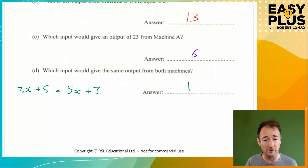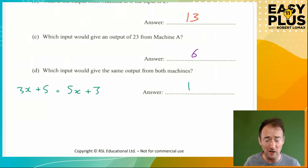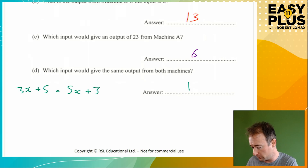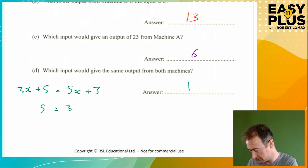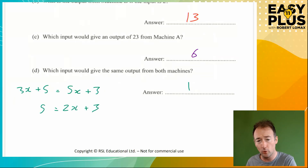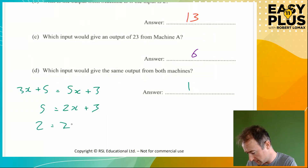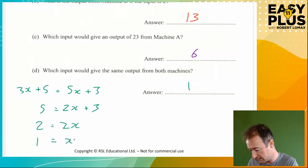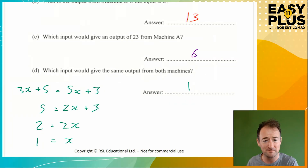Now we just solve the equation. We want all the x's on one side, so we take away 3x from both sides: 5 equals 2x plus 3. We want all the numbers on one side, so we take away 3 from both sides: 2 equals 2x. Divide both sides by 2: 1 equals x, so x equals 1. And we've got that answer already in the space.